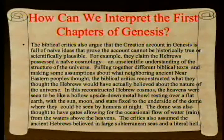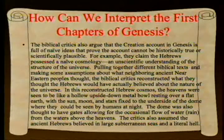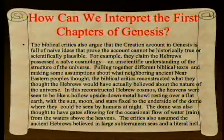In this reconstructed Hebrew cosmos, the heavens were seen as a hollow upside-down metal bowl resting over a flat Earth, with the sun, moon, and stars fixed to the underside of the dome. The dome was thought to have gates allowing for the occasional flow of water—rain—from the waters above the heavens. The critics also assumed the ancient Hebrews believed in large subterranean seas and a literal underworld.